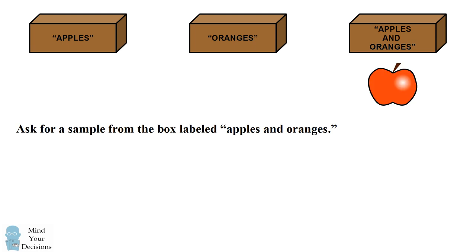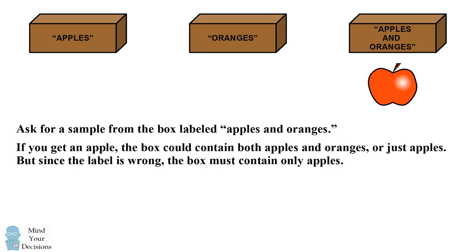Suppose you get an apple. Now the box could contain both apples and oranges, or it could contain only apples. The key is that you know the label of apples and oranges is wrong. Therefore, this box must contain only apples. You can put the correct label on this box.